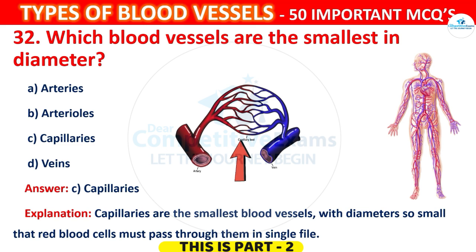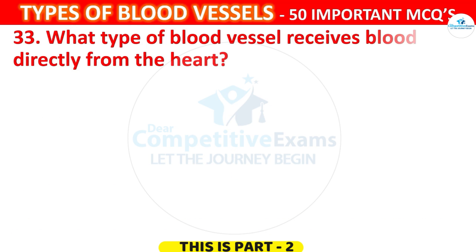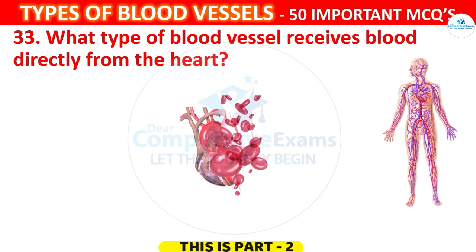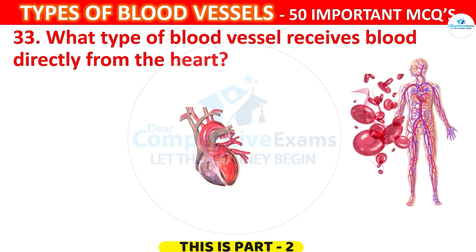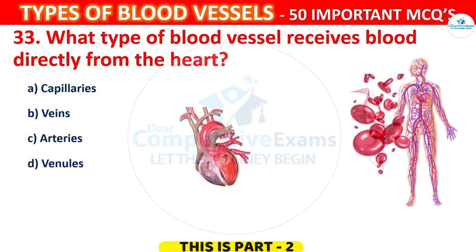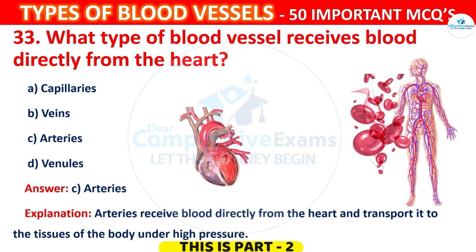Question 33. What type of blood vessel receives blood directly from the heart? The correct answer is C, that is Arteries.